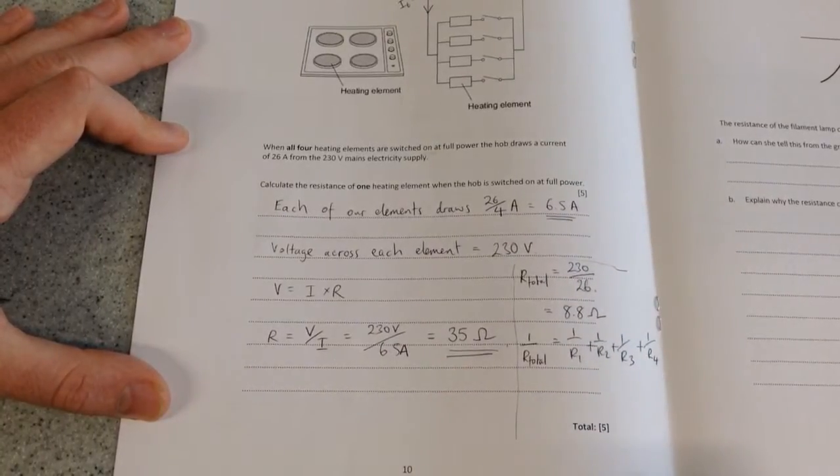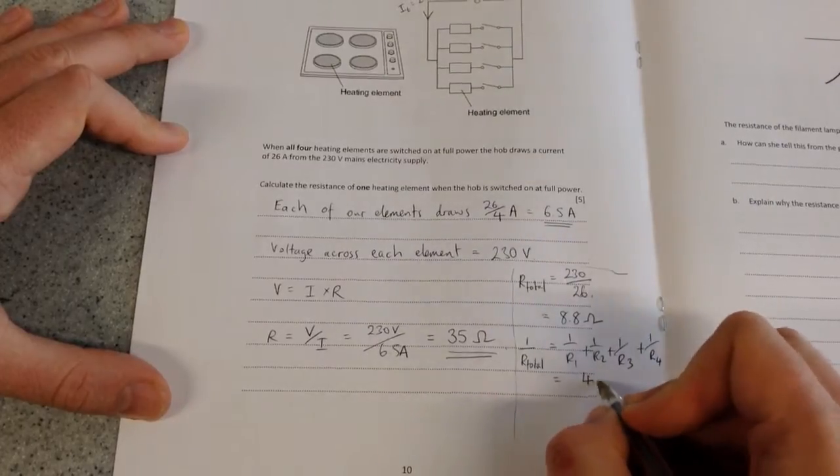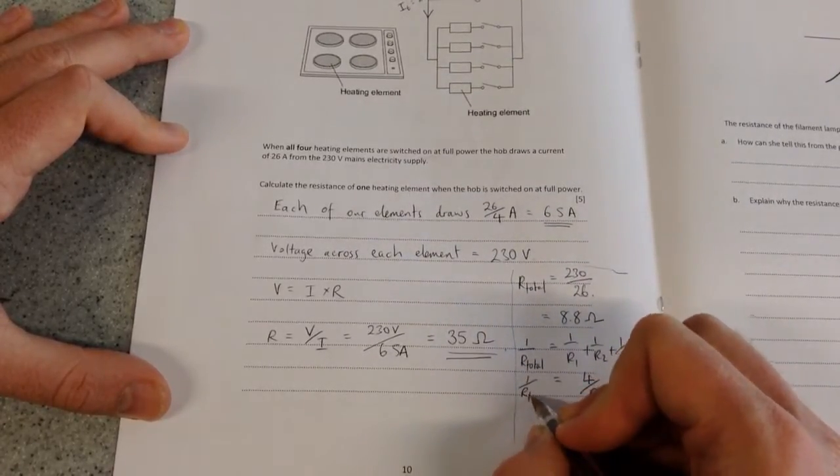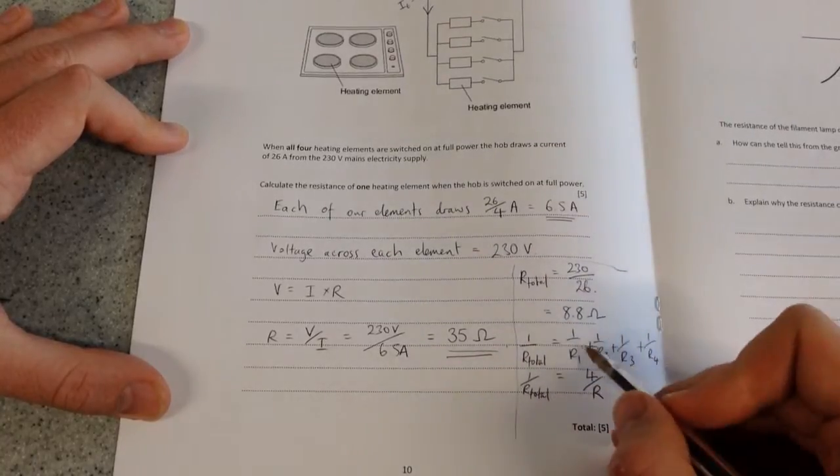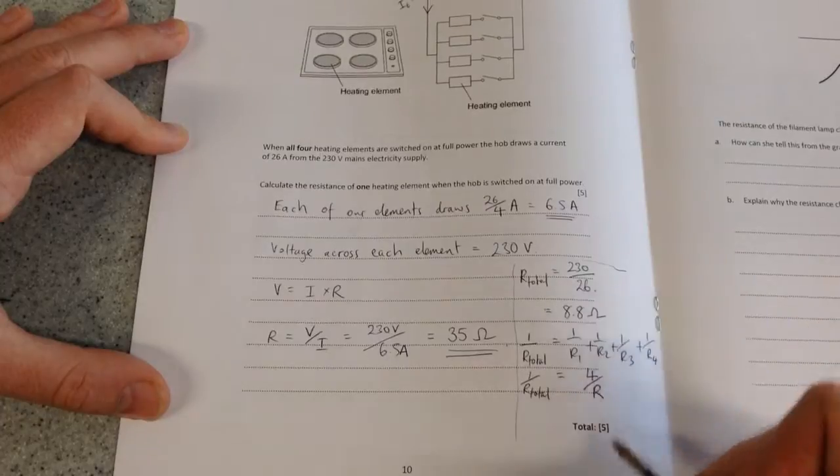R1, R2, R3, R4, they're all the same. They all equal R. So that is the same as saying 4 over R. Lots of people made the mistake there of saying that this would be 1 over 4R. It isn't.